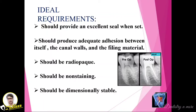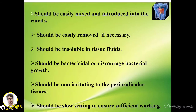What are the ideal requirements of a sealant? Any sealant should provide an excellent seal when set. It should produce adequate adhesion between itself, the canal walls, and the filling material. It should be radiopaque, non-staining, and dimensionally stable. It should be easily mixed and introduced into the canals. It should also be easily removed, because sometimes re-RCT is needed when the previous RCT is under-obturated or has other problems.